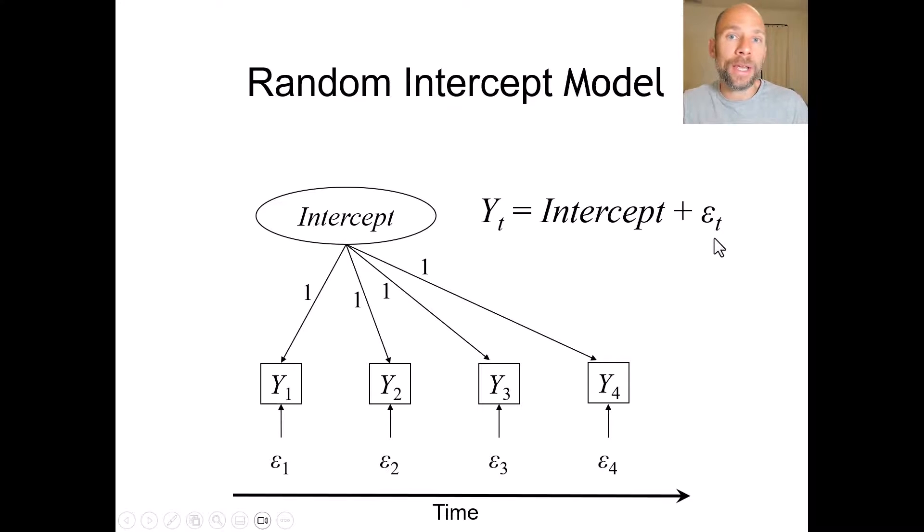So measurement error can vary across time but the intercept factor score is always the same regardless of time point, which means that we could say this is a trait model where the latent trait scores that are represented by the intercept do not change across time.